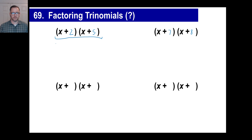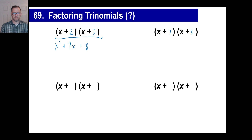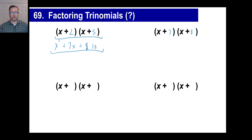We're going to get x squared — x times x. Then we're going to get 5x, and we're done with that x. Then we're going to get 2 times x, which is 2x. So 5x plus 2x is 7x. And the last thing we get is 10.